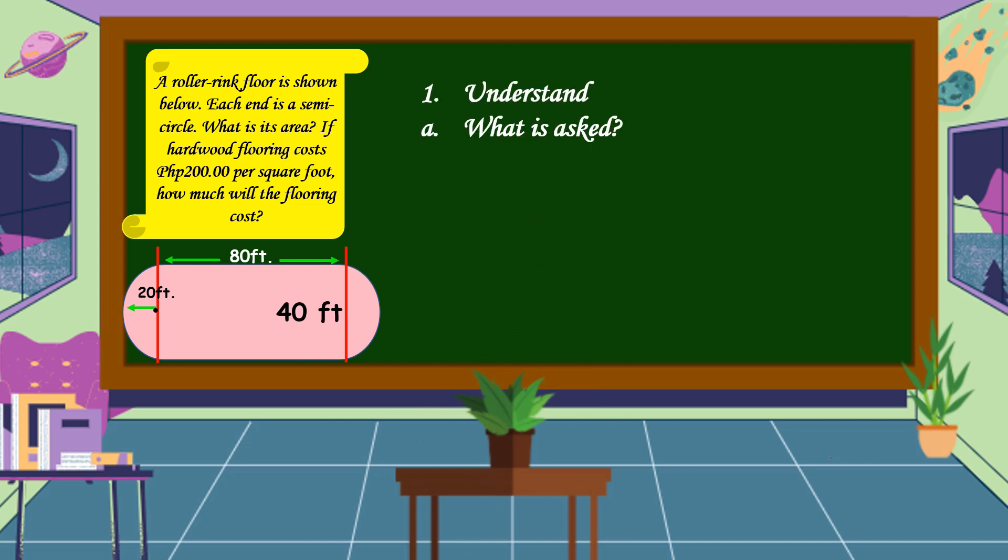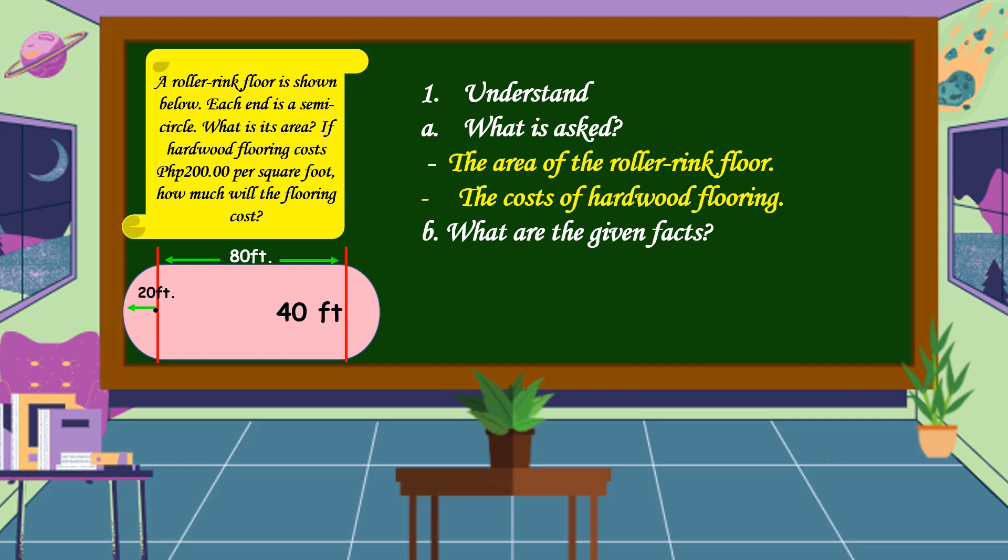First, we are going to understand the problem. We should know what is asked. In this problem, it is asking for the area of the roller rink floor and the cost of hardwood flooring. What are the given facts? The given facts are 80 feet for length, 40 feet for width, 20 feet radius, and 200 pesos per square foot.